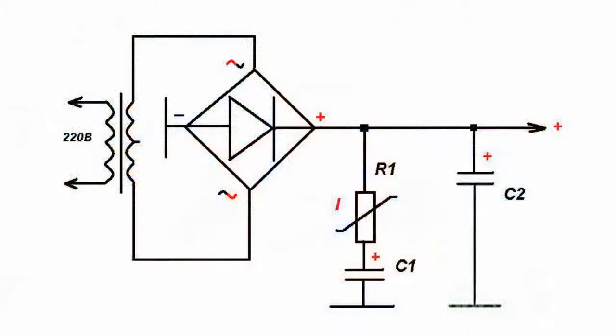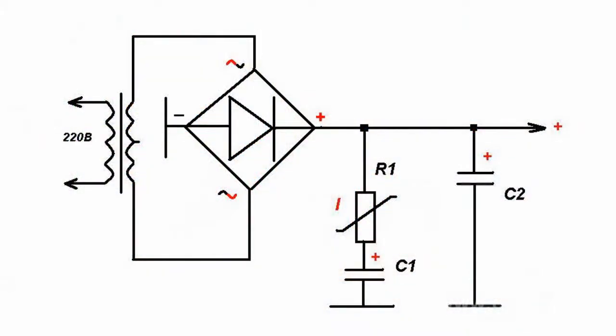To limit the charge current of the filter capacitors, constructors often use current limiting components that in the majority of cases get disconnected automatically. One example is a parallel rectifier diode protection circuit, where capacitor one is connected in series to the resettable fuse.